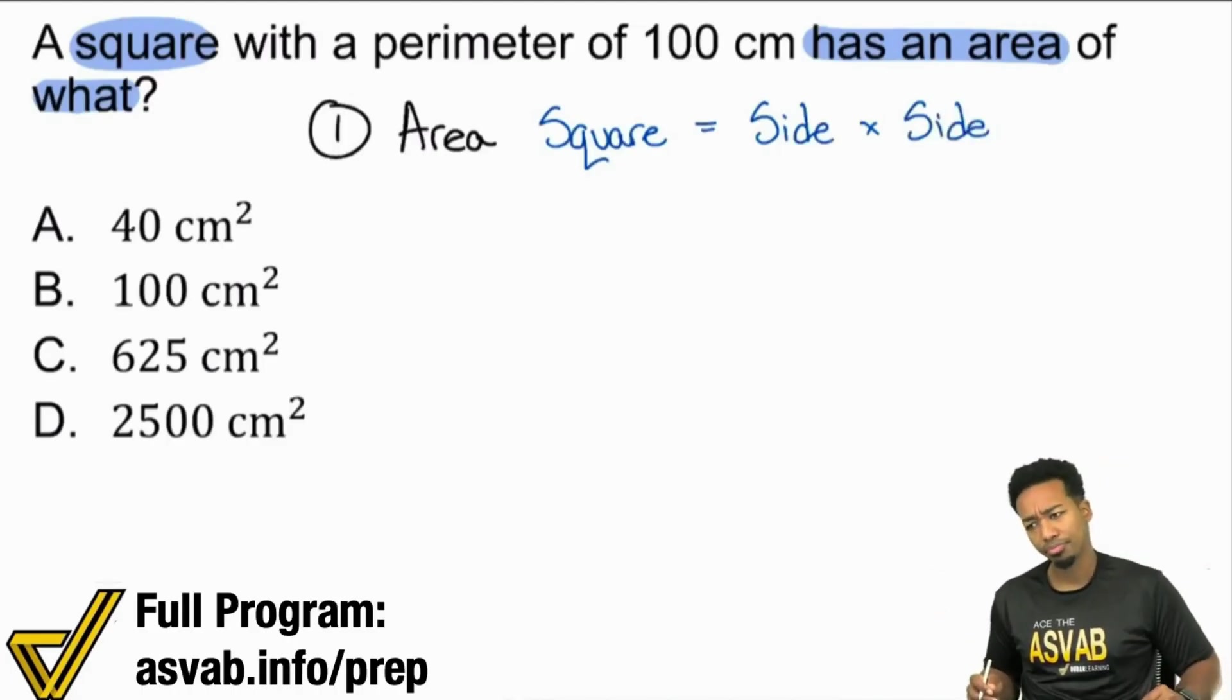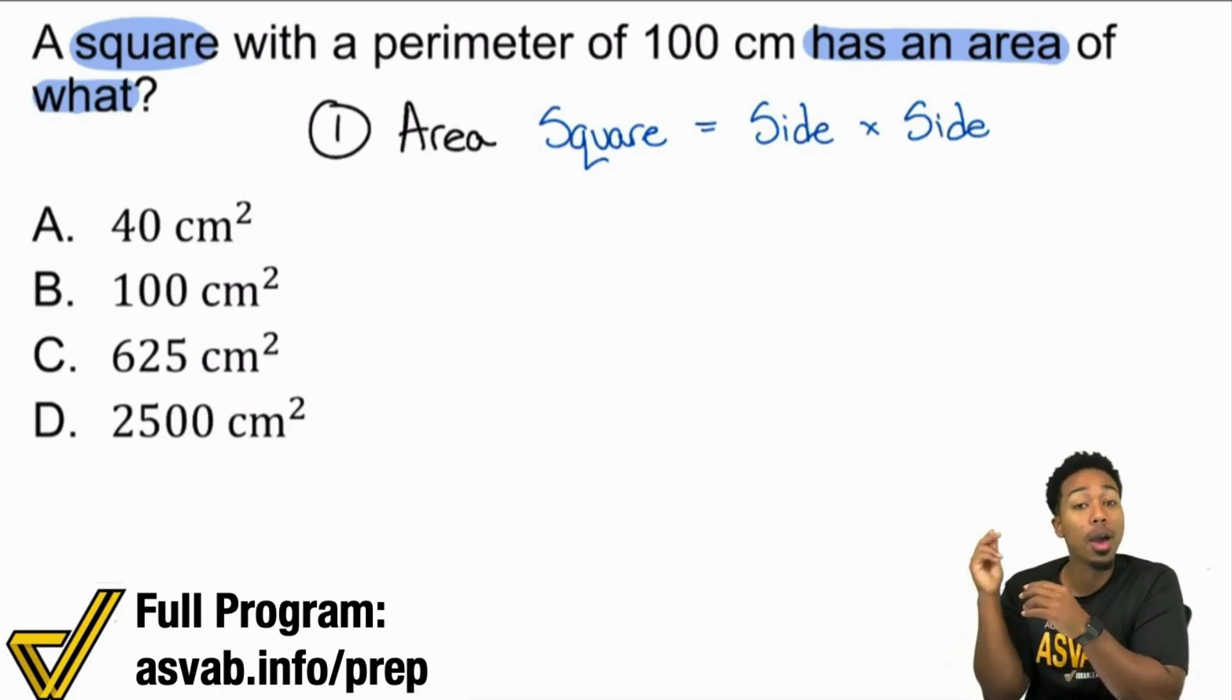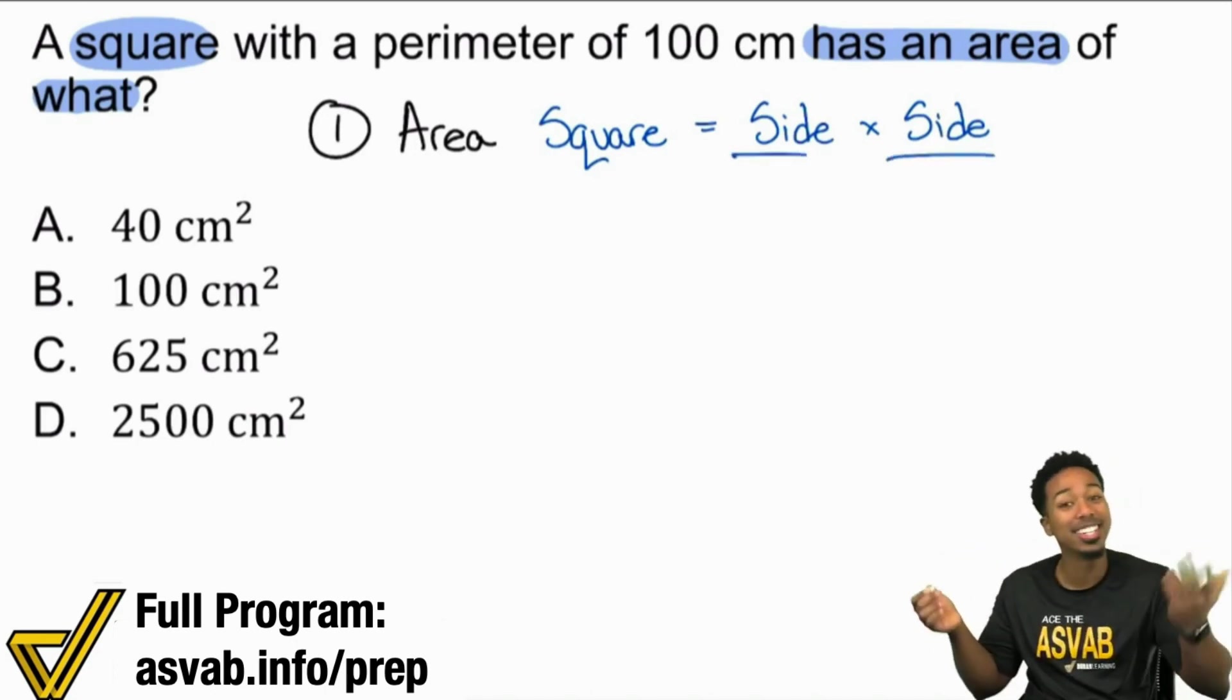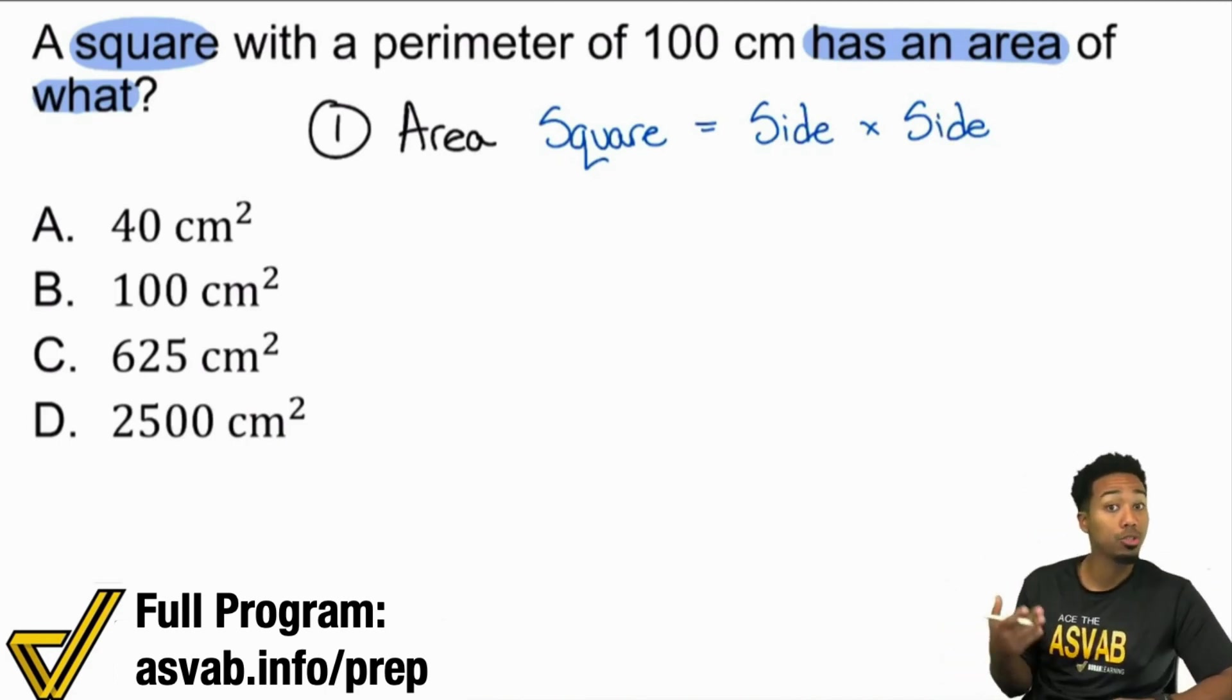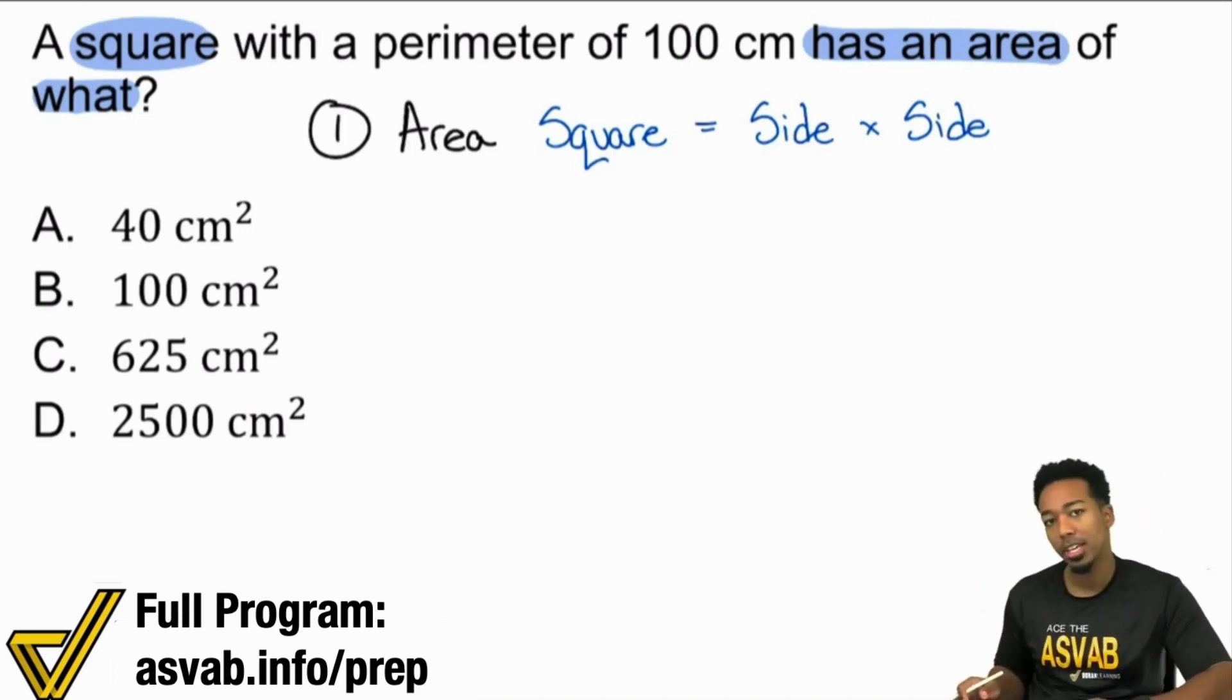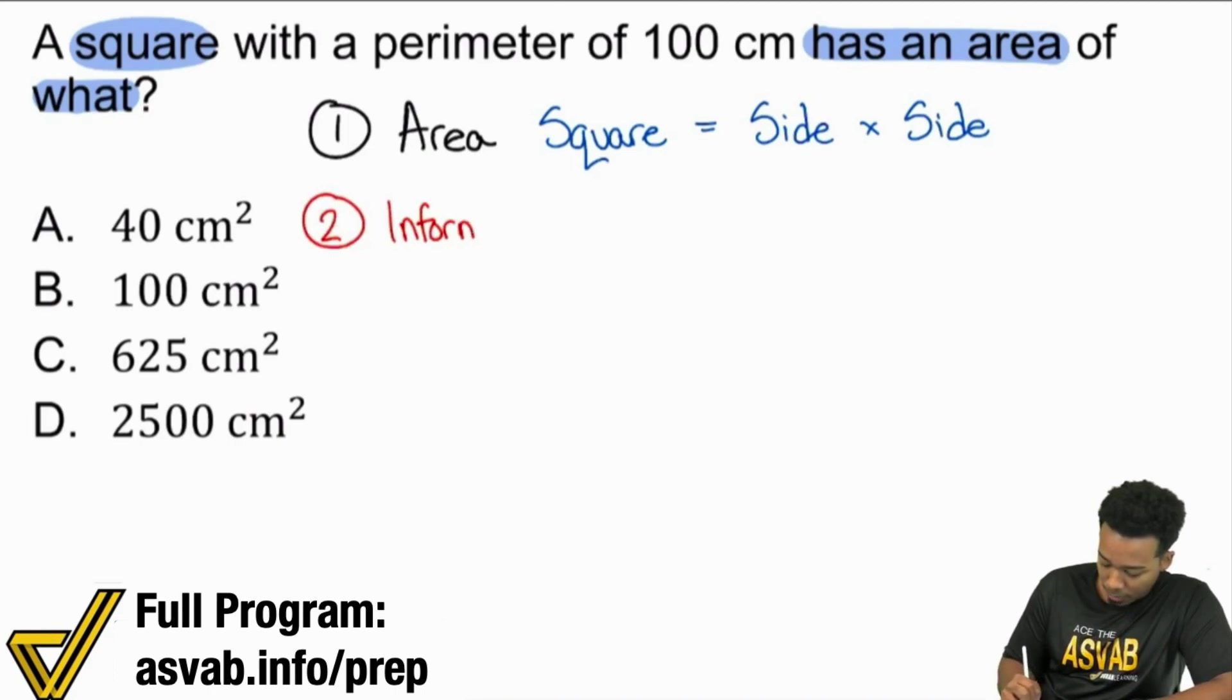Okay, cool. Now, how does that help? Well, the reason that this helps is because we now know that no matter what, if we can get the side of this particular square, we're good. Because we just do side times side and we're done. So that's the idea. Understand what you're looking for so you can understand what you need. That's the thing about geometry. With geometry, every single piece of information is connected. Every piece. So with that, how do we find the side of this square? Well, let's go ahead and first take down our information. Let's first take a look at our information. Our information states that this square has a perimeter of 100 centimeters.